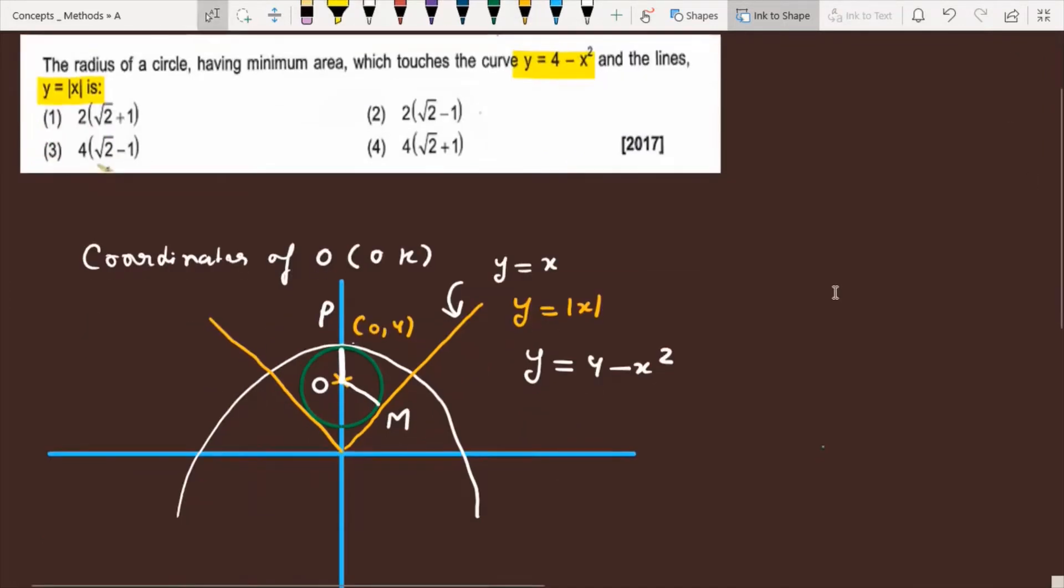I will explain the question. What is the question? First of all, you have two curves. One curve is y equals 4 minus x square, so this is the equation of a parabola, a concave downward parabola, 4 units above. You have to shift, so the shape of it will look like this, which is 4 minus x square.